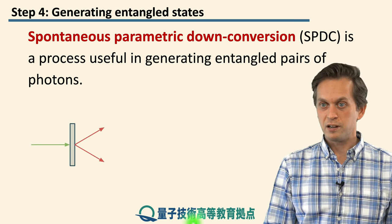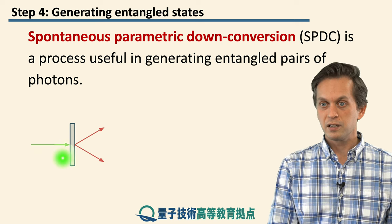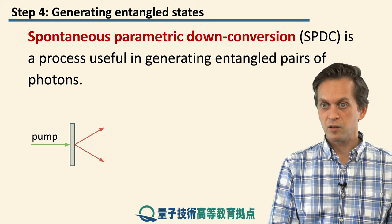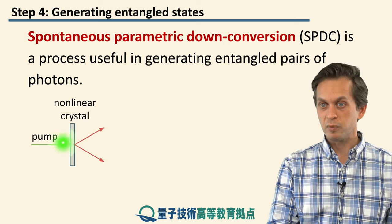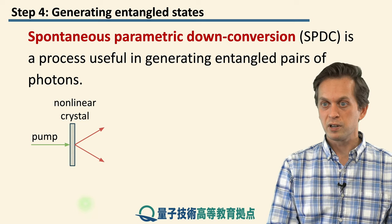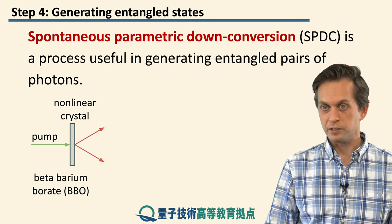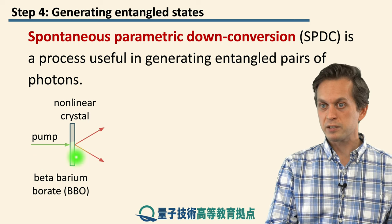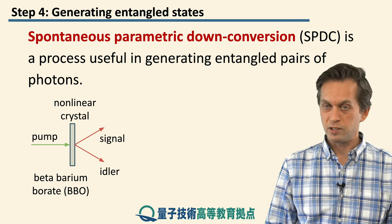We will demonstrate it here with this little graphic. Imagine that you've got some laser light, represented by this green arrow — normally we call it the pump. This pump light is incident on a nonlinear crystal represented by this rectangle. In this particular case, a very popular one used in practice, it's a BBO crystal, which stands for beta barium borate. What actually happens is that this pump laser gets transformed and split into two beams: one is called the signal and the other one is called the idler.